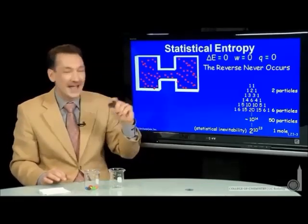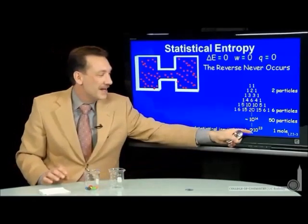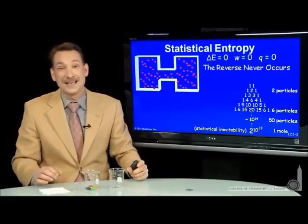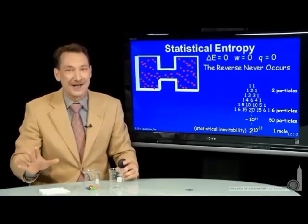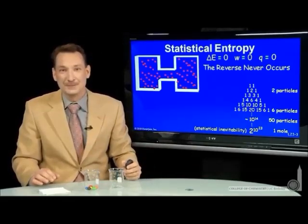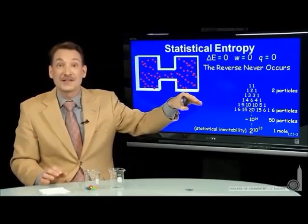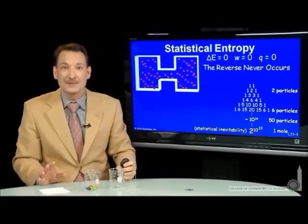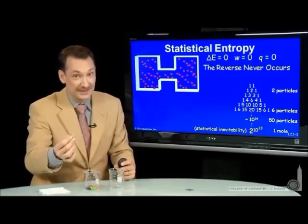If you look at this system every second for a million lifetimes, the likely case is the one you'll see — trillions and trillions of times more likely that you'll see them equally distributed. No one has ever observed them all on one side. In all human existence, this is still overwhelmingly more likely we'll see equal distribution. So this is actually a measure of the direction that the universe likes to go — the natural progression is towards the most likely arrangement.